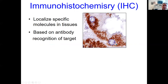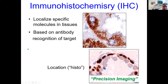The technique most people are familiar with is called immunohistochemistry, or IHC. You often see pictures like this in textbooks and lectures where you see a brown stain overlaying cells and tissues from a photomicrograph. The goal in this technique is to be able to localize specific molecules of interest within cells and tissues and their structures, based on antibody recognition of its specific target.